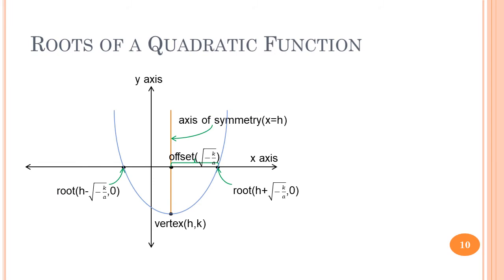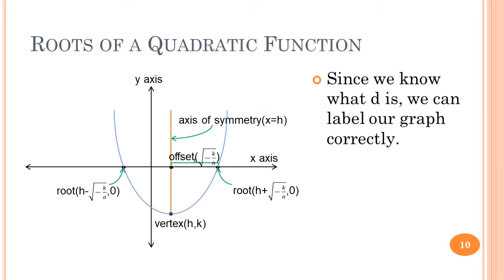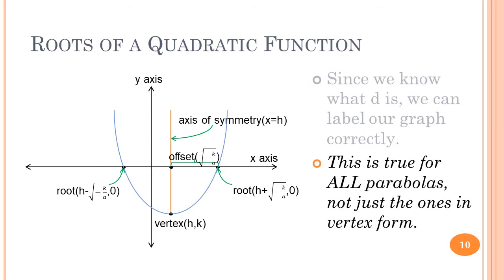Let's label our graph correctly. We know what d is now — it's simply the square root of negative k over a. So we have our roots: one is h minus the square root of negative k over a, and the other is h plus the square root of negative k over a. This graph and formula work for all parabolas, not just those in vertex form.